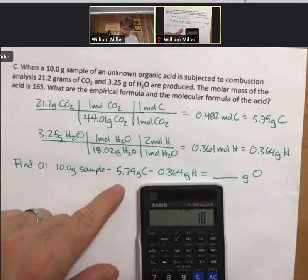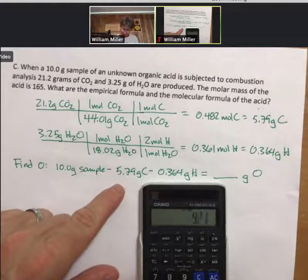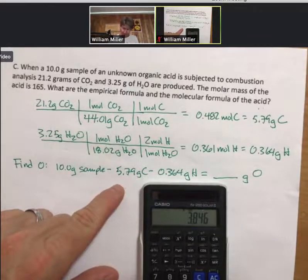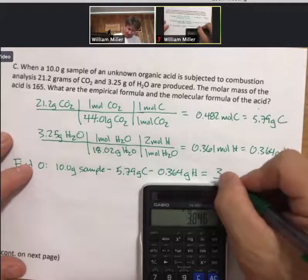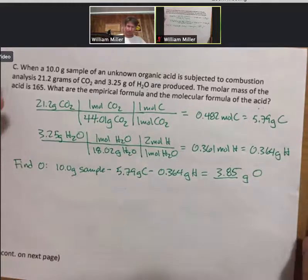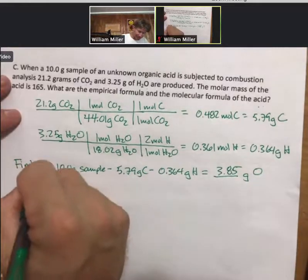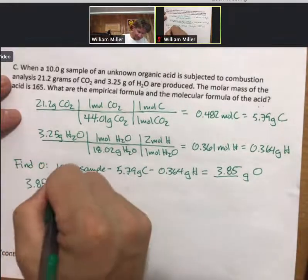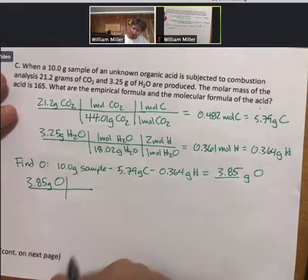10 minus 5.79 minus 0.364. So, 3.85. Again, I know we've done this a couple times. Hopefully, it's okay if I go a little more quickly.